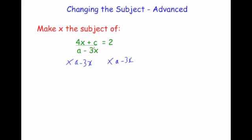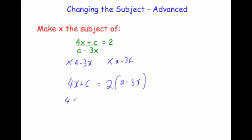We're dividing by a minus 3x, so if we times both sides by a minus 3x we're left with the top line: 4x plus c. The right hand side is 2 times a minus 3x, written as 2 bracket a minus 3x. Multiplying out the brackets gives us 4x plus c equals 2a minus 6x.